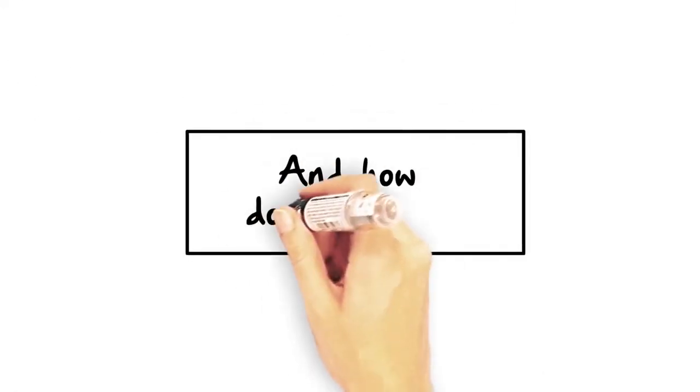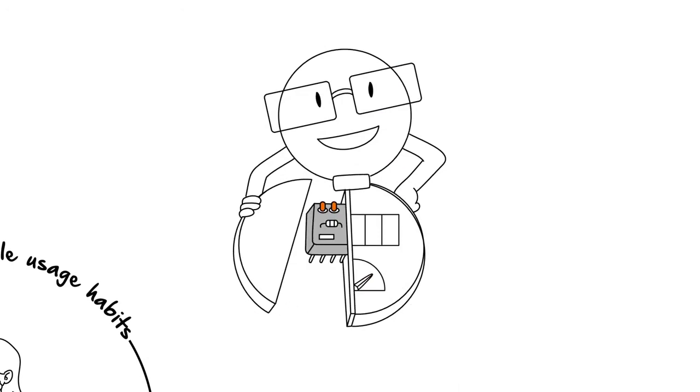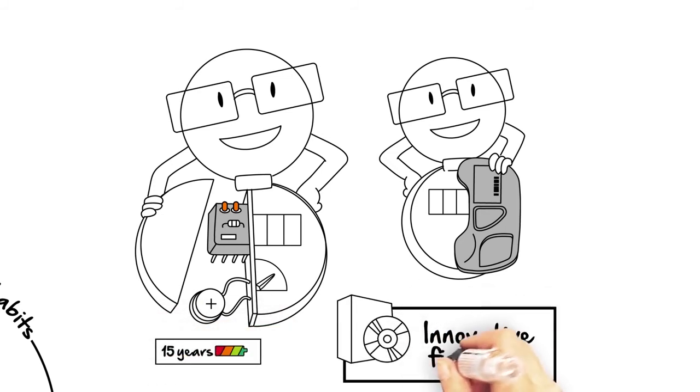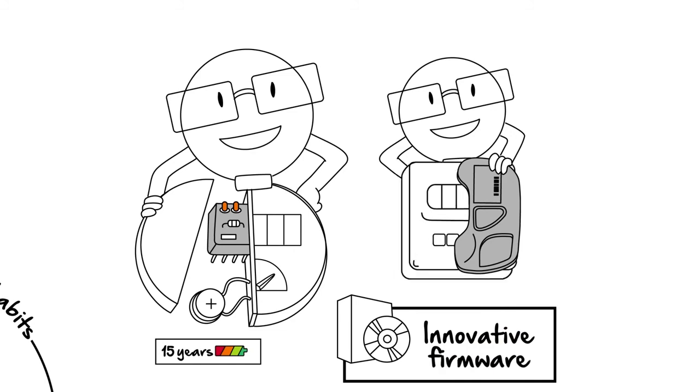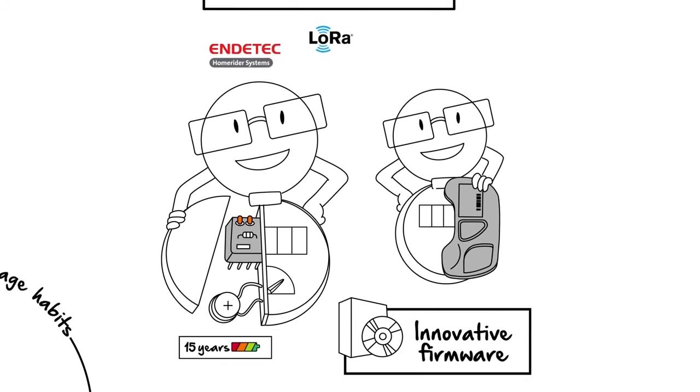And how does it work? A smart meter has an electronic sensor located inside the meter or on top of it. With a battery, it is self-sufficient and lasts around 15 years. Equipped with innovative firmware, this sensor adapts to different meter brands and to various wireless collection modes, either fixed or mobile.